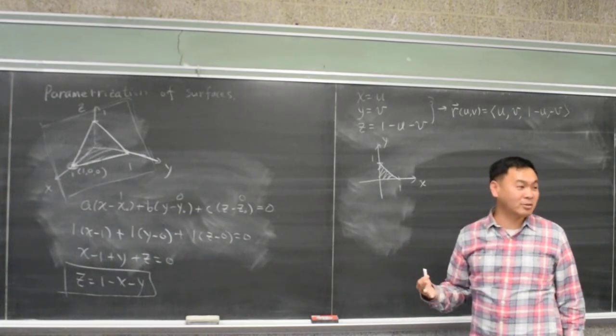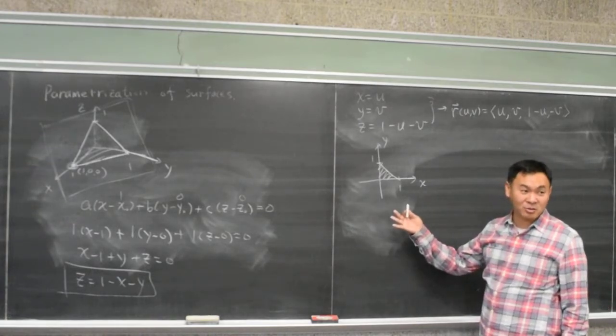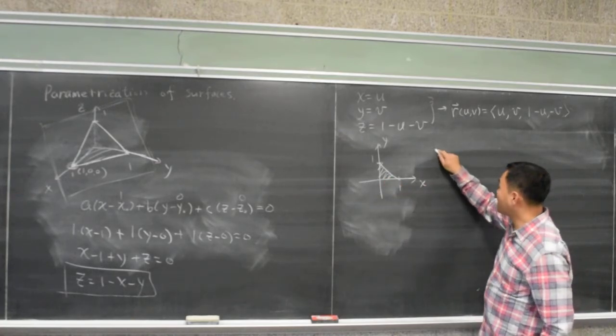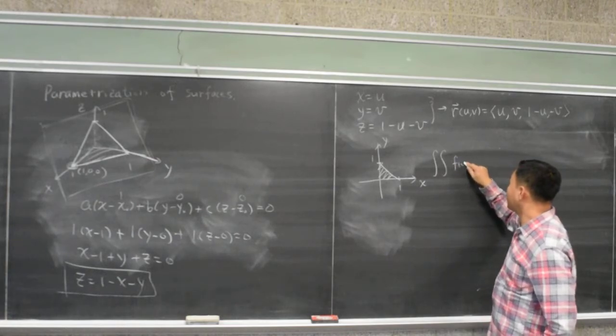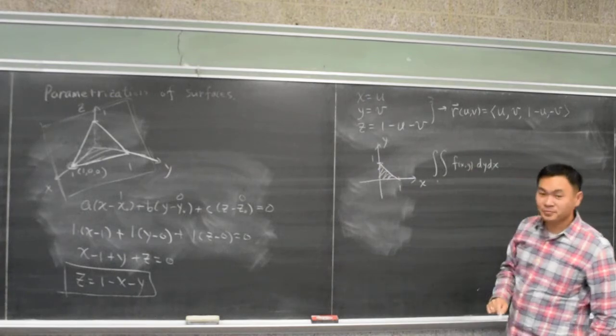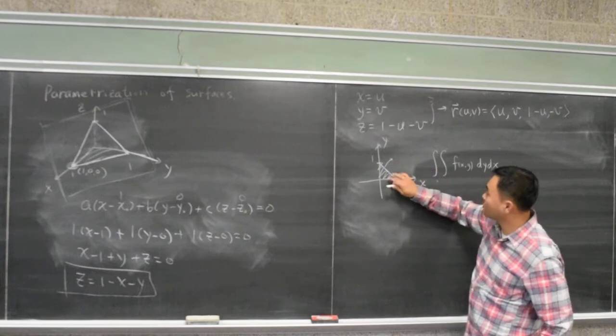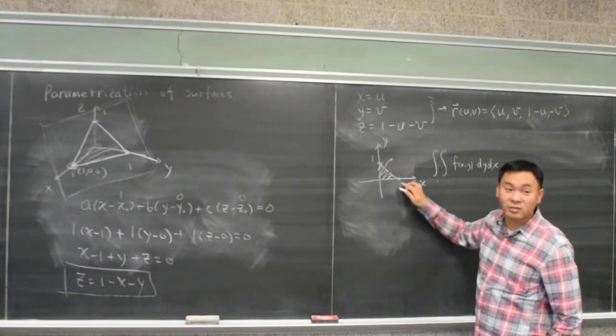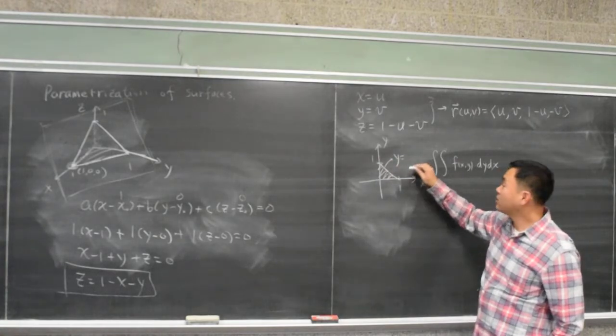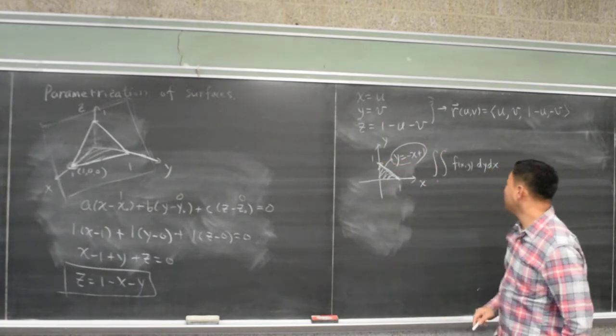So, now I have to somehow come up with the bounds for this. That's exactly what we've been doing when we were doing double integrals. If you can remember how we did the double integrals, then we can easily write down the bounds. We first need the equation for this line. The slope is negative 1, y intercept is 1, so y is equal to -x + 1.